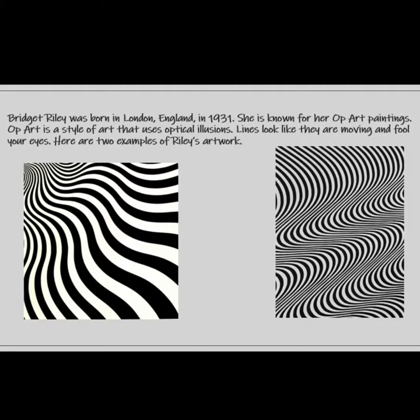Bridget Riley was born in London, England in 1931. She is known for her op-art paintings. Op-art is a style of art that uses optical illusions, lines that look like they are moving, and fool your eyes.